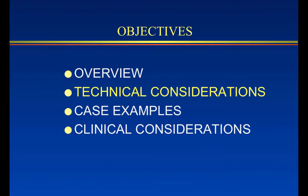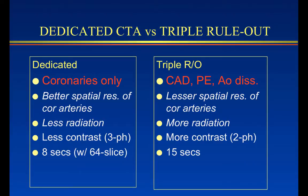Moving to some technical considerations comparing the triple rollout to dedicated coronary CTA: triple rollout is a comprehensive study, but because it is comprehensive, there are some potential trade-offs. One potential issue is that there may be less spatial resolution of the coronary arteries because we're doing a more generalized scan. Radiation and contrast issues are other considerations. The length of the scan is greater, and depending on the type of scanner, the time required may lead to motion artifacts which can degrade the image, not only in the coronaries but in other parts of the scan.